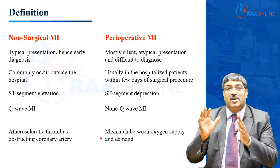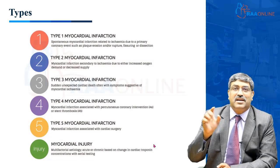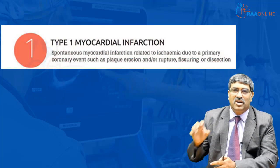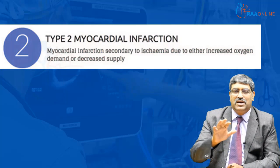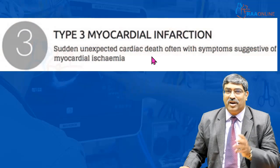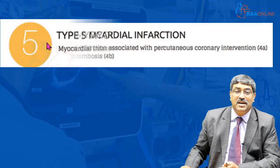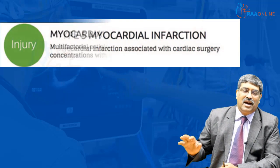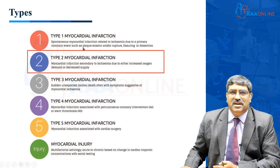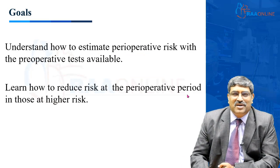In non-surgical MI, it is plaque rupture of an atherosclerotic thrombus obstructing the coronary artery. There are six types of perioperative MI. Type 1 is associated with plaque rupture; Type 2 is a mismatch between oxygen demand and supply; Type 3 is unexpected cardiac death associated with myocardial ischemia; Type 4 is associated with percutaneous intervention like angioplasty; Type 5 is MI associated with cardiac surgery; and Type 6 is myocardial injury. Almost 90 percent of cases involve a mismatch between oxygen demand and supply.